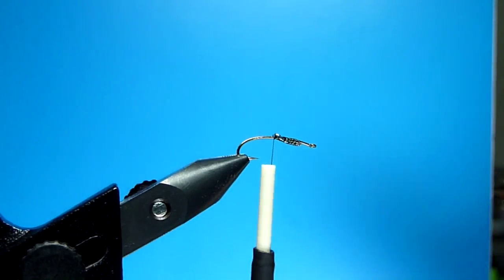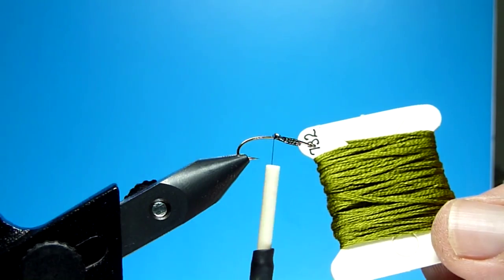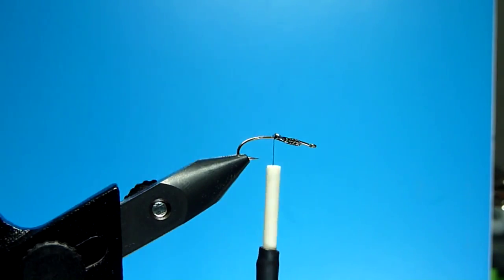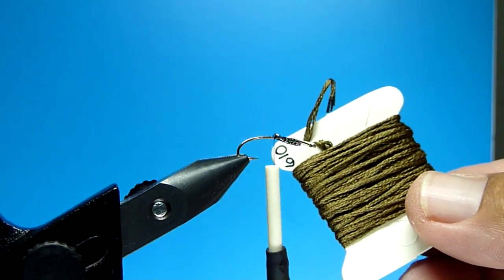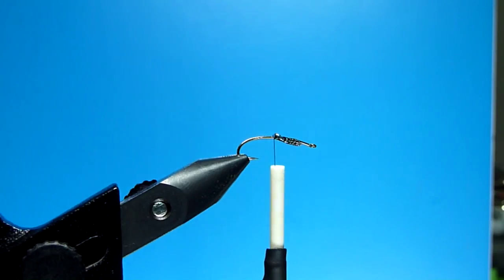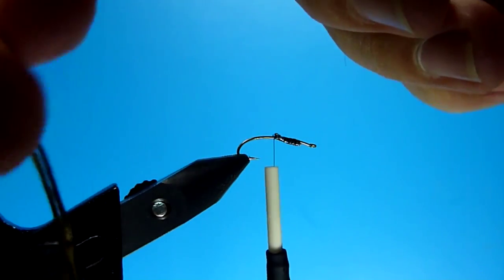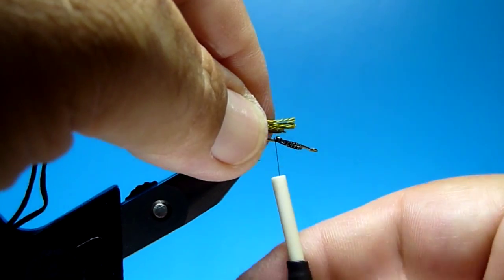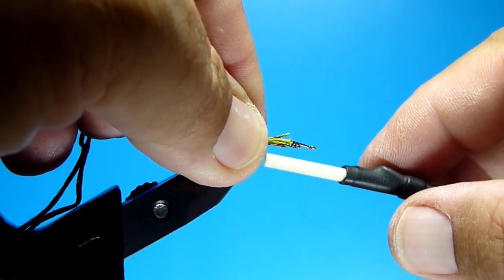For the back body we're going to do a woven body using embroidery thread. Use a 732 olive and a 610 brown. The olive will be the belly, the brown will be the back. Clip off about 5 or 6 inches of thread.